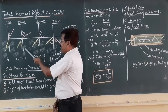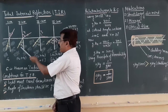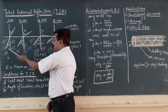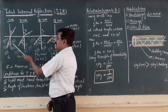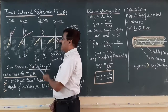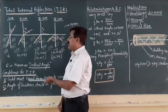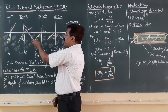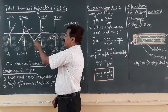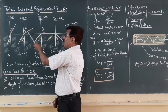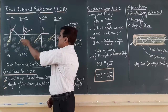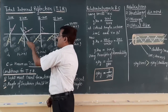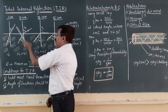In the second case, the angle of incidence is greater than in the first case. Then we observe that the angle of refraction will be more than the previous case, that is r2 is greater than r1.